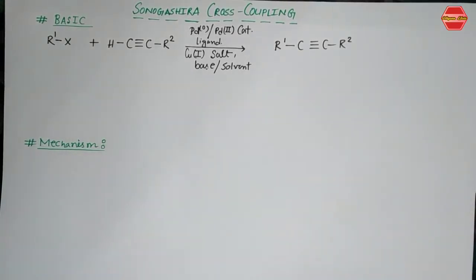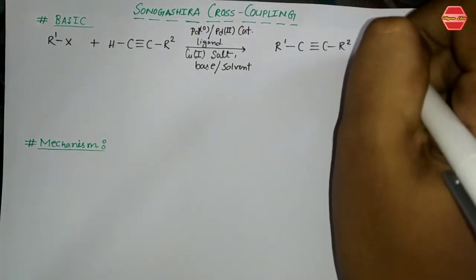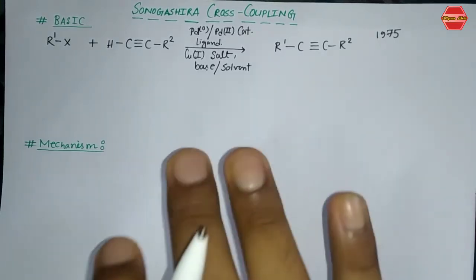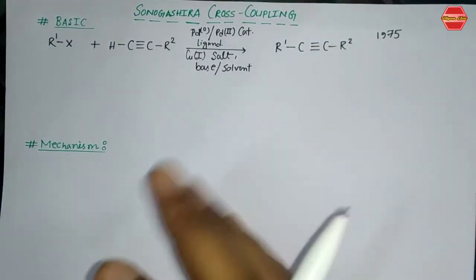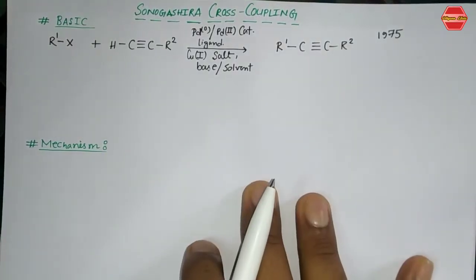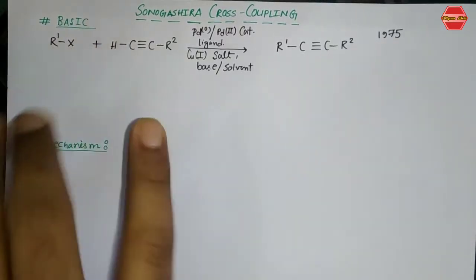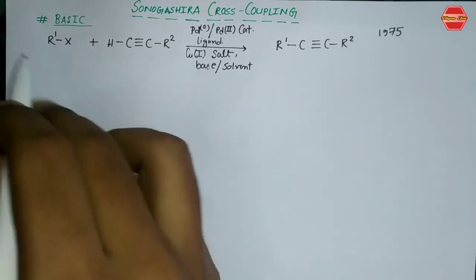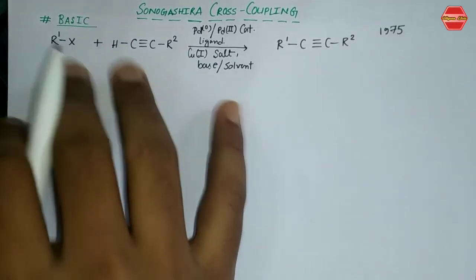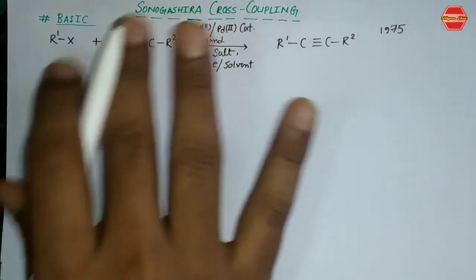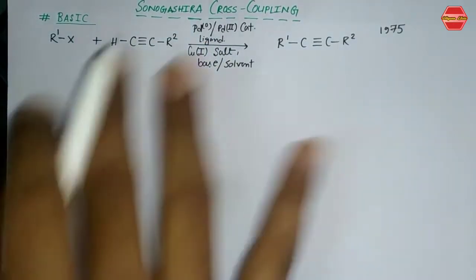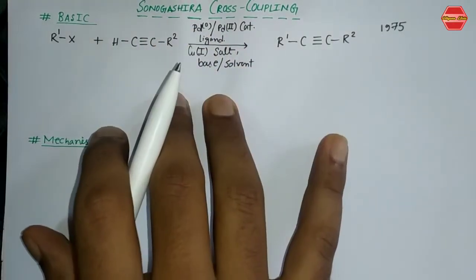In the year 1975, Sonogashira and his co-workers reported that symmetrically substituted alkynes can be used in cross coupling-based reactions along with aryl halide or alkyl halide. As you can see, the basic things of this reaction are an aryl halide and a coupling partner — specifically a terminal alkyne — which can be used as a coupling partner in the Sonogashira cross coupling reaction.